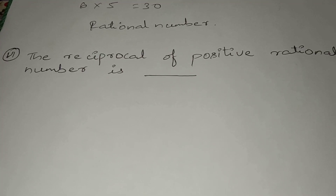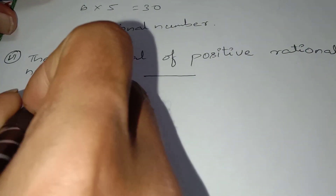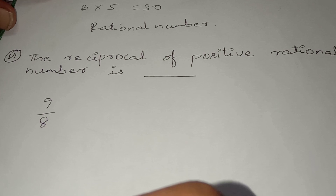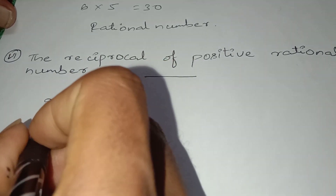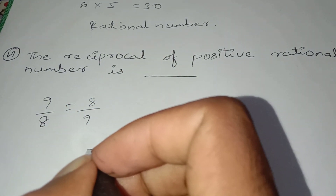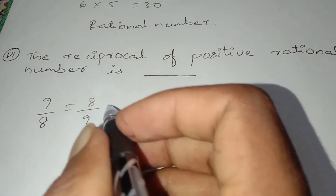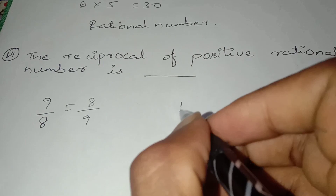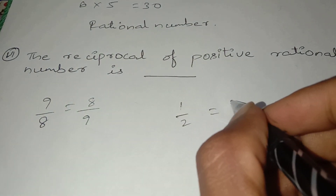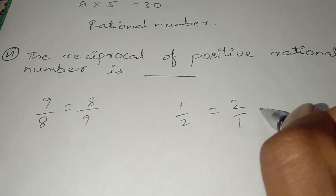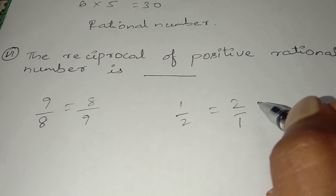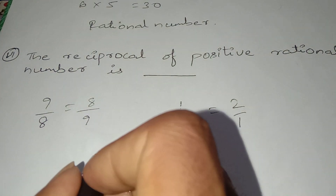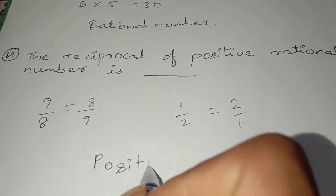The reciprocal of a positive rational number is always positive. If I take a positive rational number 9 by 8, its reciprocal is 8 by 9 - and 8 by 9 is also a positive number. If I take 1 by 2, its reciprocal is 2 by 1, which is also a positive rational number. So the reciprocal of a positive rational number is always positive.